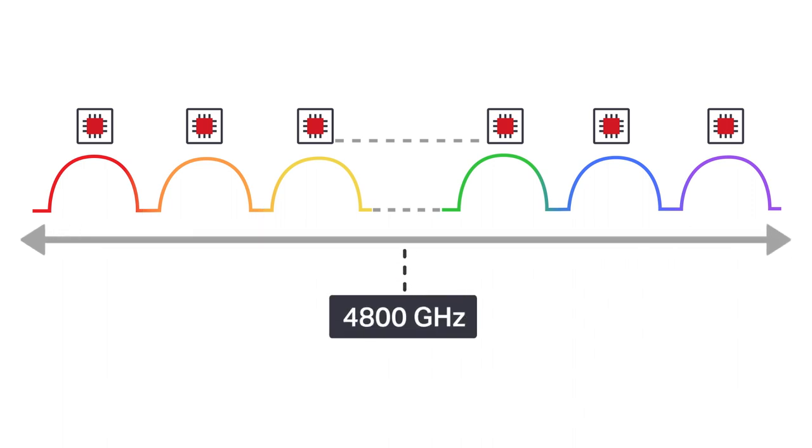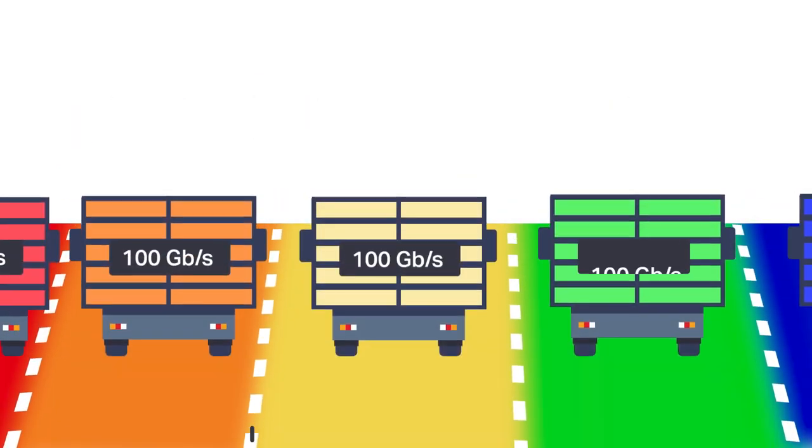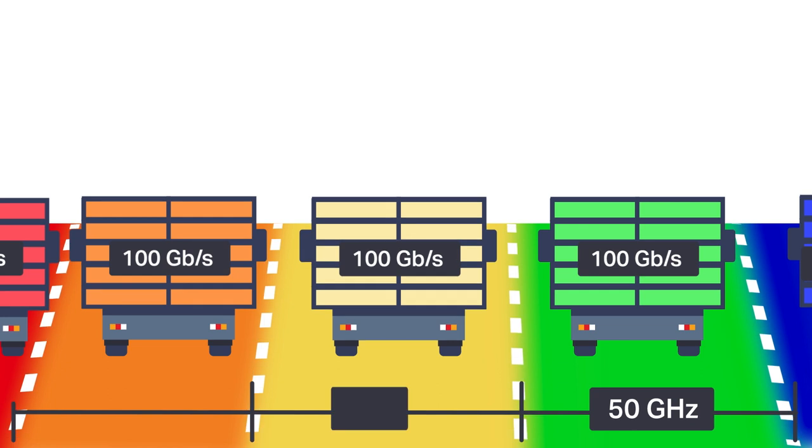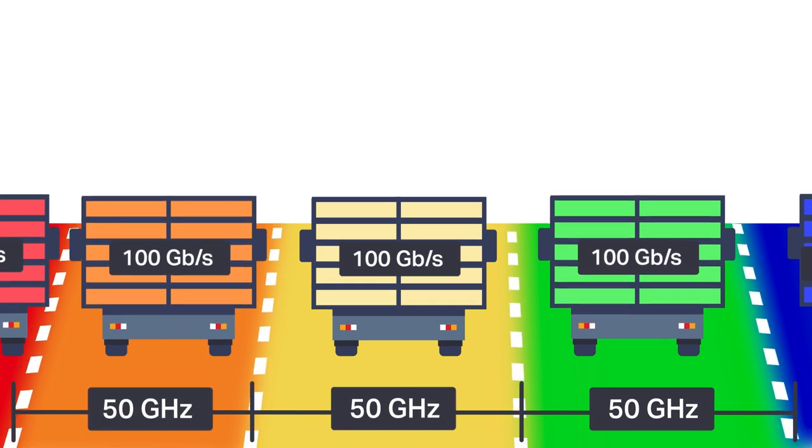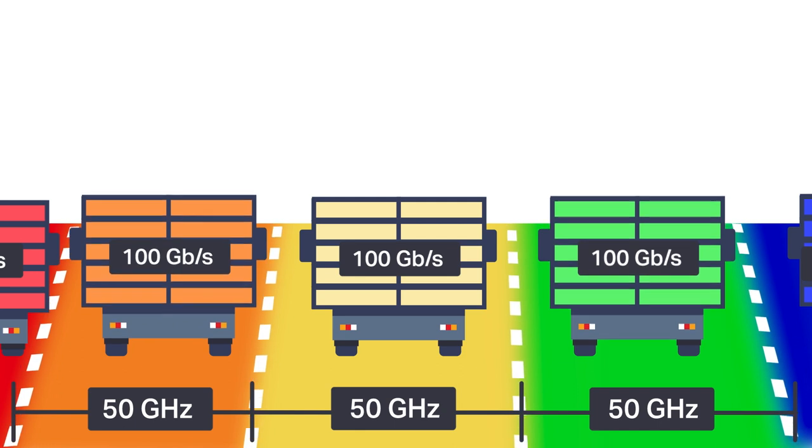In most systems today, there is 4800 gigahertz of spectrum available in the C-band. So, for example, if a user deploys 100 gig wavelengths with 50 gigahertz fixed channel spacing, their fiber can transport 96 times 100 gigabits per second or 9.6 terabits of capacity. This is analogous to a truck carrying a certain payload and requiring a certain amount of space in a lane. The total payload that can be carried will be the maximum payload each truck can carry times the number of trucks.